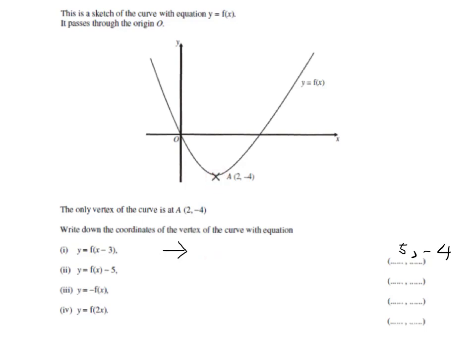So, the vertex will still be at x equals 2, but it will have been dropped by 5 from minus 4. So, minus 4 take 5 is minus 9.